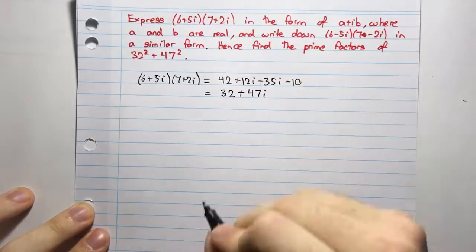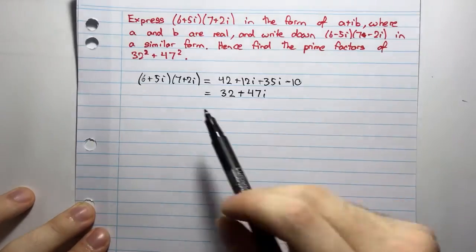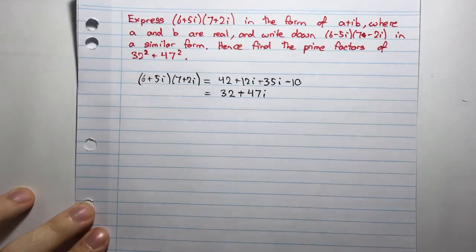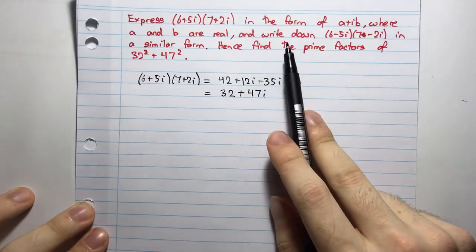And here I can start to see a bit of a relationship. I have 32 and 47 popping up, and here I have a 32 and a 47. Okay, now let's go ahead and continue on.